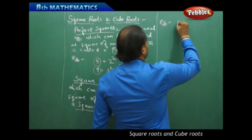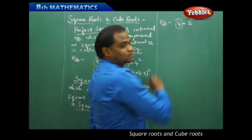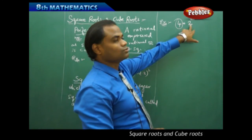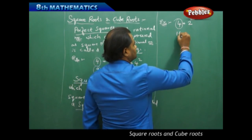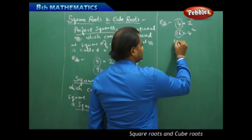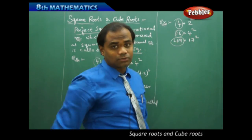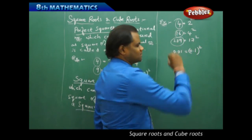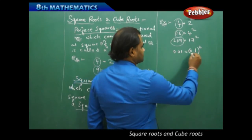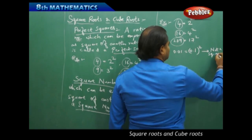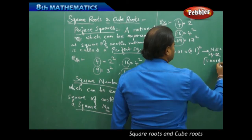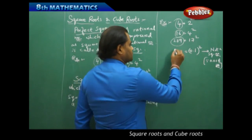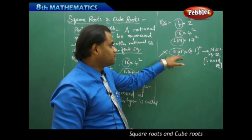For example, if I take 4, this can be written as 2 squared, therefore 4 is a square number. 4 is also a perfect square, and it is also a square number because 4 is an integer and 2 is also an integer. I take 16 which is 4 squared, so 16 is also a square number. If I take 289, which is 17 squared, then 289 is also a square number and also a perfect square. But 0.01 is not a square number since 0.01 does not belong to Z, the set of integers. However, 0.01 is still a perfect square.